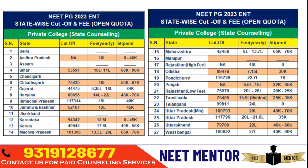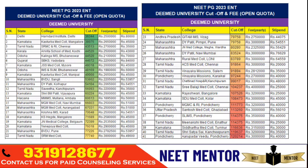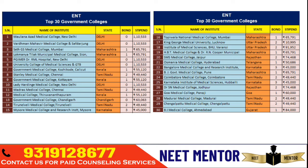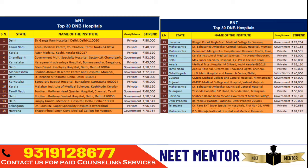We will also cover ENT private college cutoffs state-wise, including open and closed states, yearly fee range and stipend range. Then deemed university cutoffs for MS ENT, fee structure and monthly stipend, then NEET score versus rank mapping for last year so you can get an idea — based on your expected score, what rank you're expecting and what options would be available for you in ENT in the rank range of 45,000 to 70,000 and 70,000 to just qualifying.